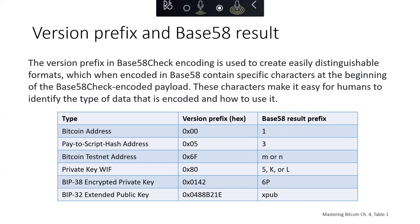In Bitcoin, most data presented to the user is Base58Check encoded to make it compact, easy to read, and easy to detect errors. The version prefix in Base58Check encoding creates easily distinguishable formats. For example, a Bitcoin address starts with 1, a Base58Check encoded private key in wallet import format starts with 5. Pay-to-script-hash addresses start with 3, testnet addresses start with M or N, and private keys in wallet import format start with 5, K, or L.